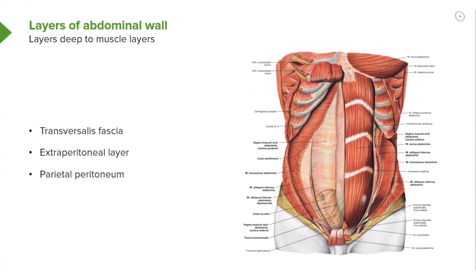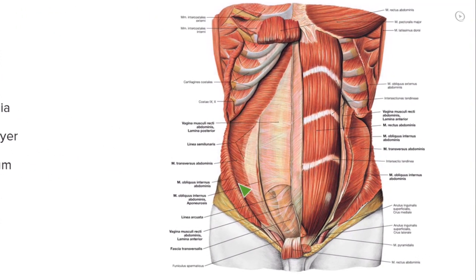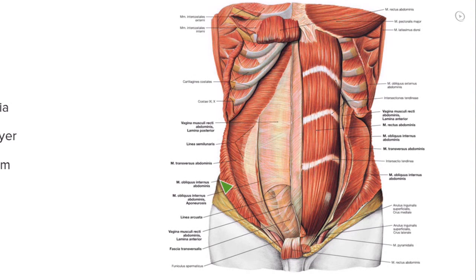Layers deep to the muscle layers include the transversalis fascia, the extraperitoneal layer, as well as the parietal peritoneum. Based on how this illustration is presented, we are going to concentrate more underneath the rectus abdominis, but these three components extend laterally as well. So what we see here is the transversalis fascia.